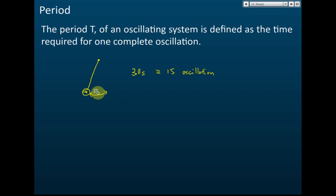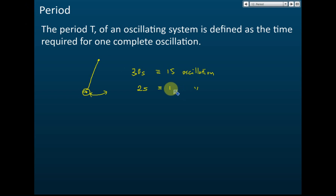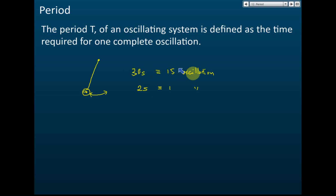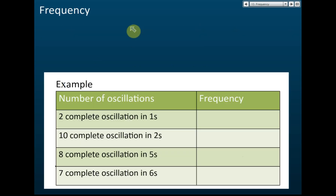So if it takes 30 seconds to make 15 complete oscillations, it means it takes 2 seconds for one complete oscillation. This 2 seconds is the period of these oscillations. To find the period, we take the time taken divided by the number of oscillations. That is how we find the period.